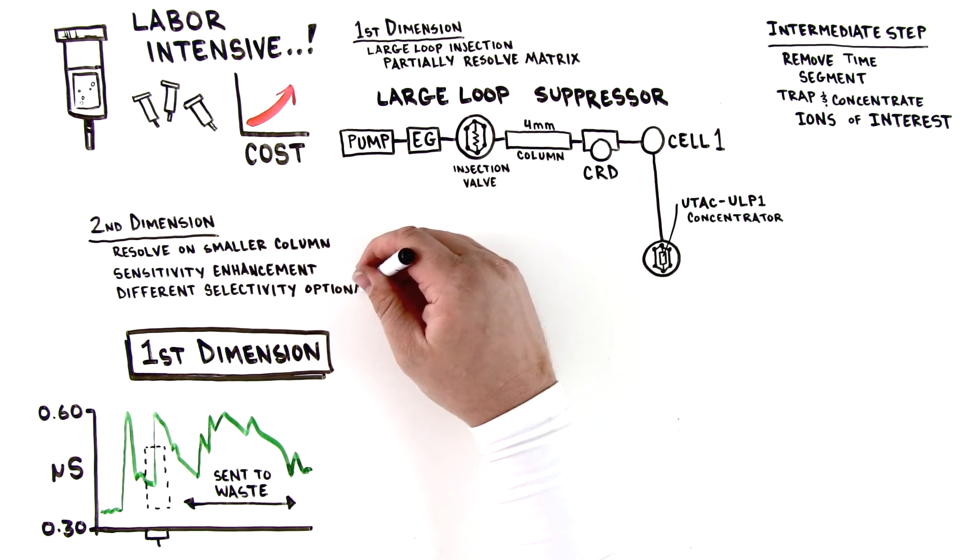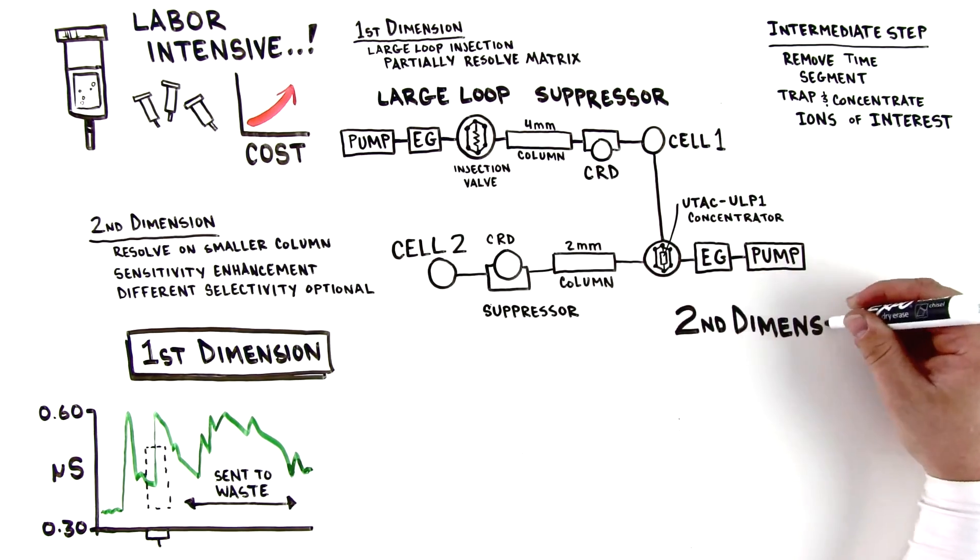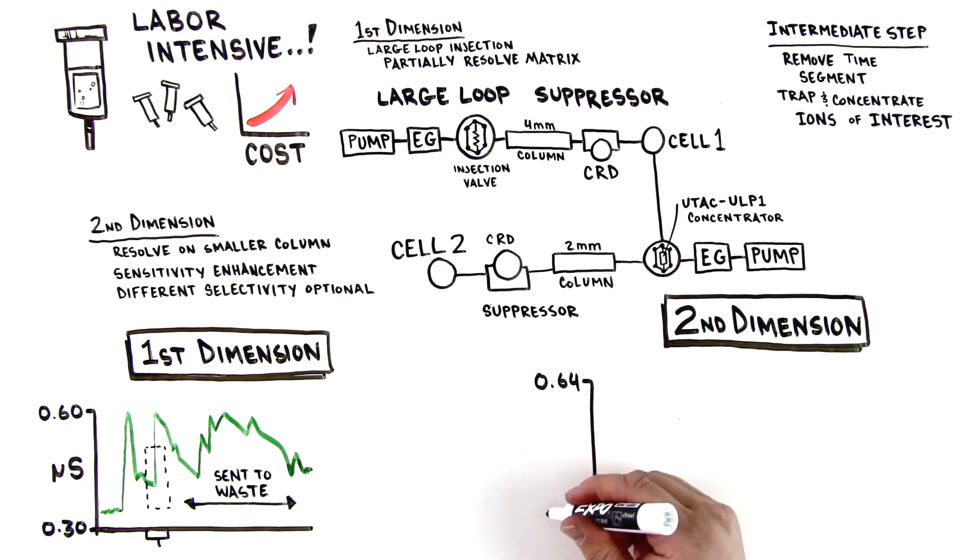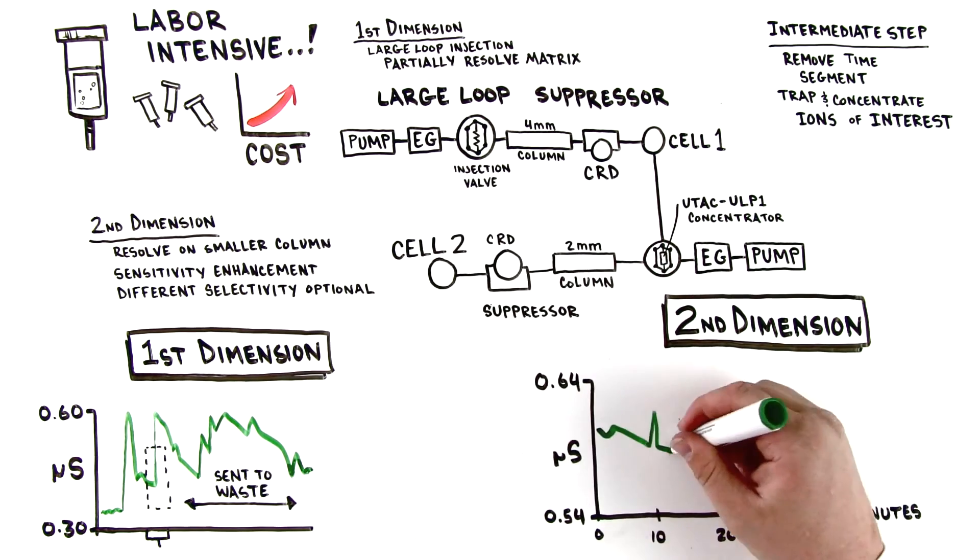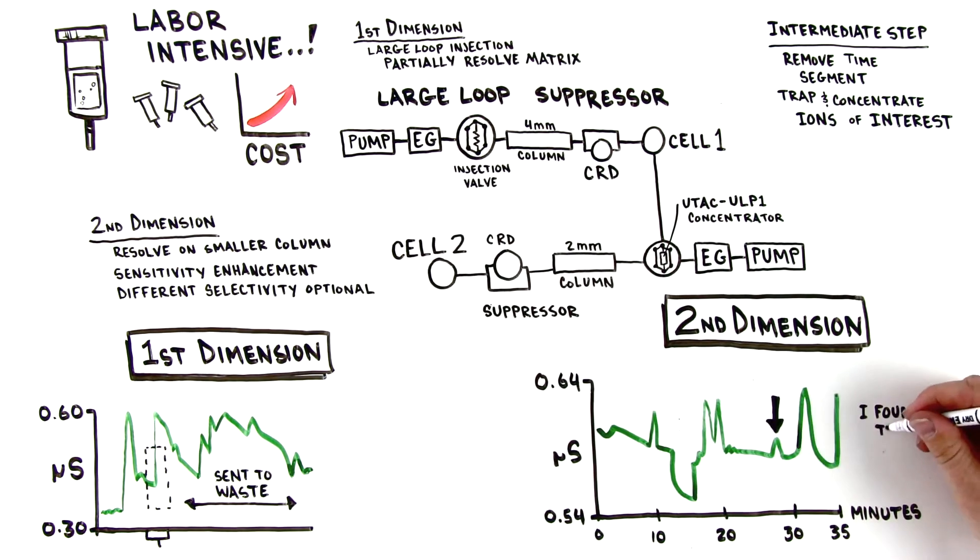The amazing benefits of 2D chromatography are that it removes matrix for maximum detection, allows for different column chemistries to prevent false positives, and the smaller column in the second dimension provides a huge signal enhancement.